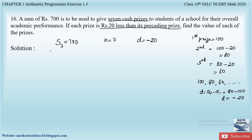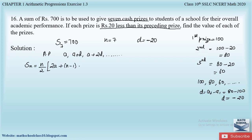The sum is given, n is given, and d is given. To form the AP we need the first term a. The general AP form is a, a+d, a+2d, and so on. Since the sum is given, we use the sum formula: Sₙ = n/2 × (2a + (n−1) × d). Substituting: S₇ = 7/2 × (2a + (7−1) × (−20)).